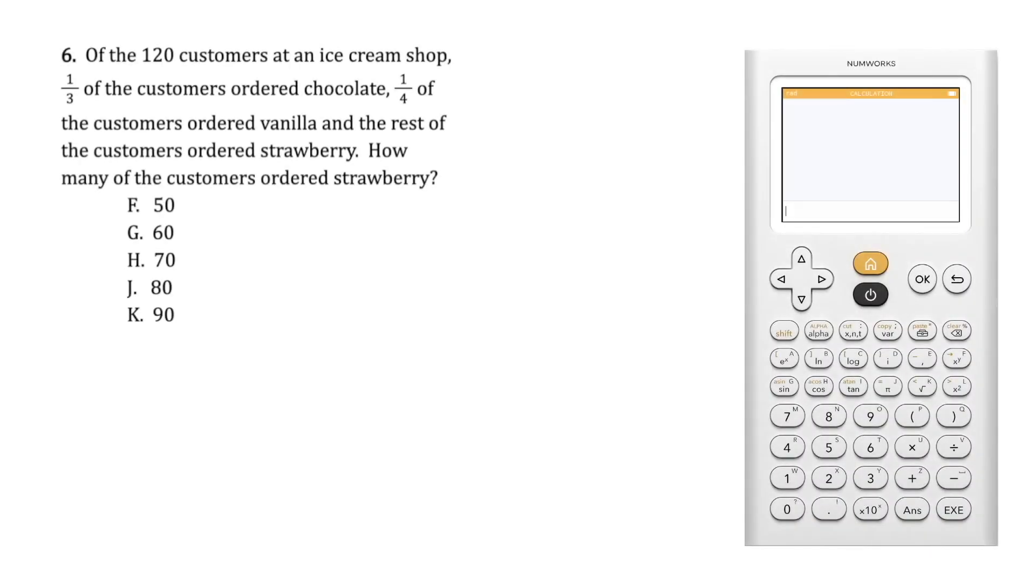To prepare for the ACT, let's look at question 6. Question 6 states: of the 120 customers at an ice cream shop, one-third of the customers ordered chocolate, one-fourth of the customers ordered vanilla, and the rest of the customers ordered strawberry.